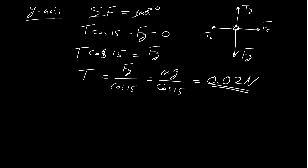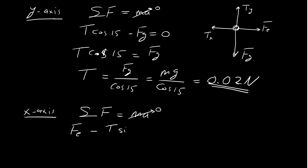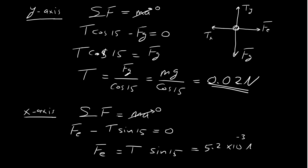Using the same procedure on the x-axis: the total force equals ma, which is zero due to static equilibrium. So the electrostatic force minus T·sin(15°) equals zero. Therefore, the electrostatic force equals T·sin(15°). Substituting the values gives us the electrostatic force equal to 5.2×10⁻³ Newtons.